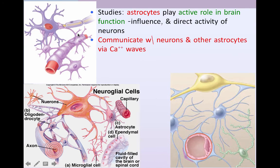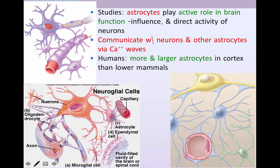Astrocytes also communicate with neurons and other astrocytes through calcium waves. When we compare humans to lower mammals, we find more astrocytes in humans, and the astrocytes in the cortex tend to be larger, making it clear that those astrocytes must be doing something very important in the brain.